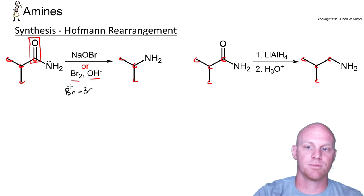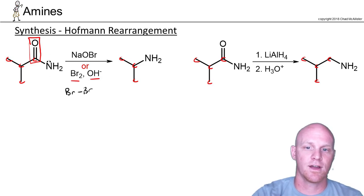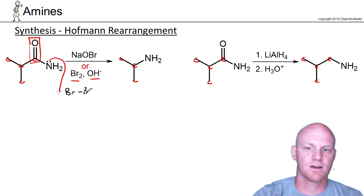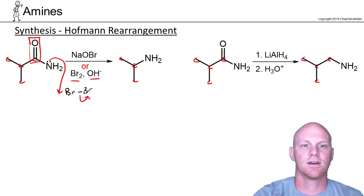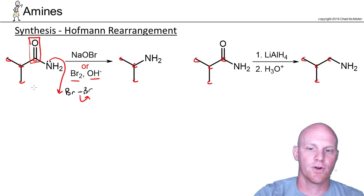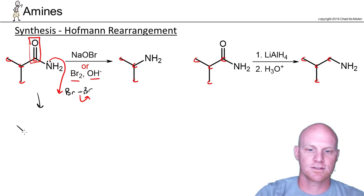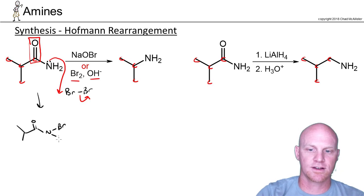So you're going to have a molecule of Br2, and your amide — the lone pair on nitrogen is first going to come in with a nucleophilic attack, connecting to a bromine. That's going to leave us now with a bromine attached to our nitrogen.